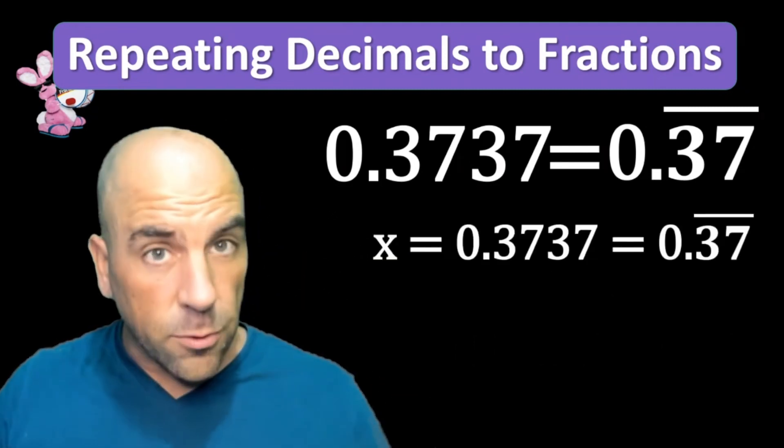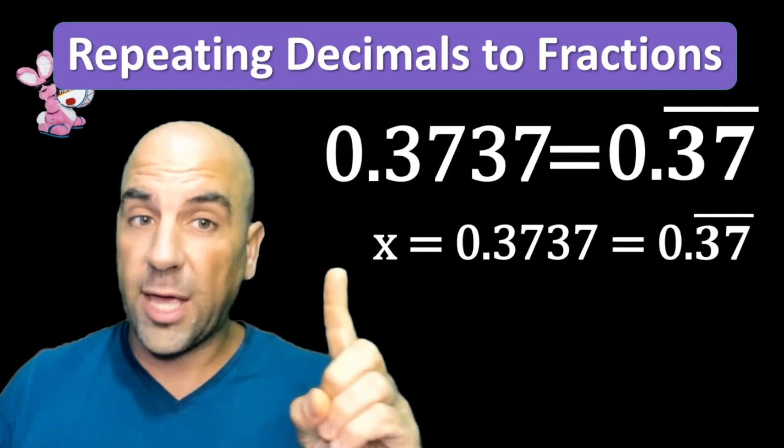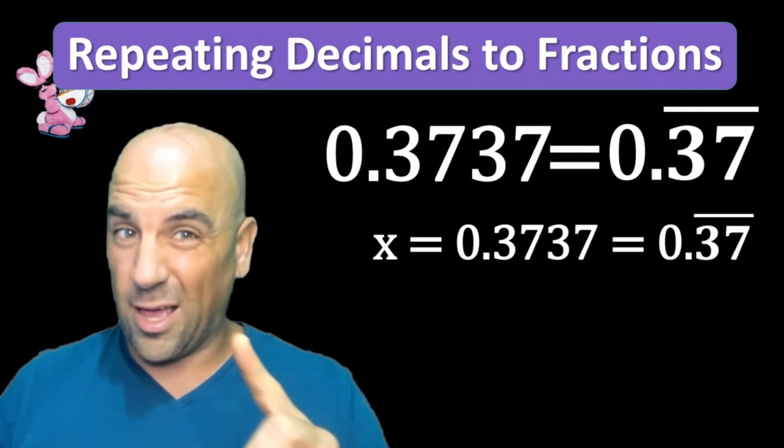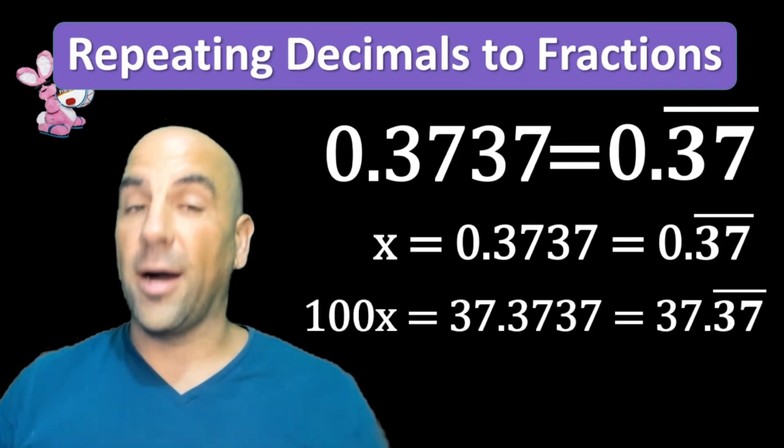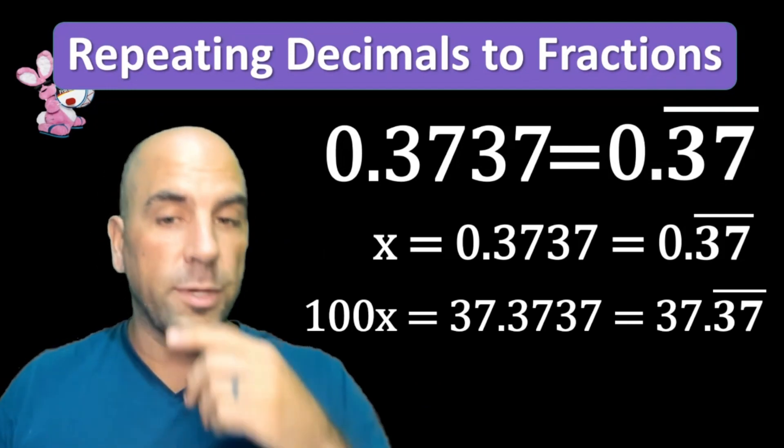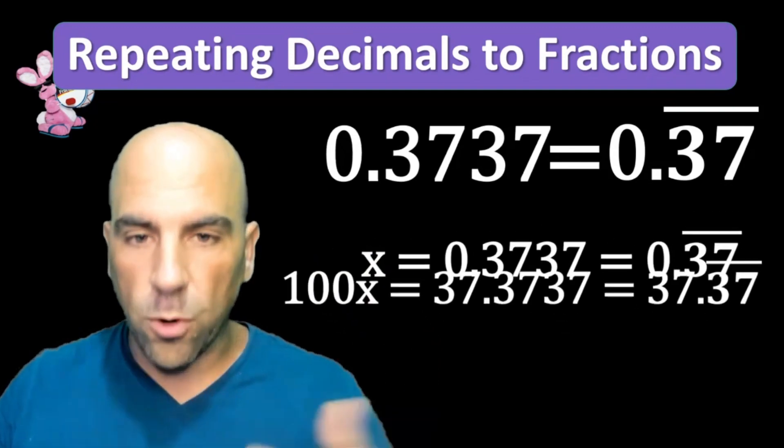Let's try that again: x equals 0.37 repeating. Now how are we going to get rid of that 0.37 repeating? We can't just multiply by 10 because then you have 3.737 repeating and that doesn't work. We have to multiply by 100. When we multiply by 100, we move that decimal two places.